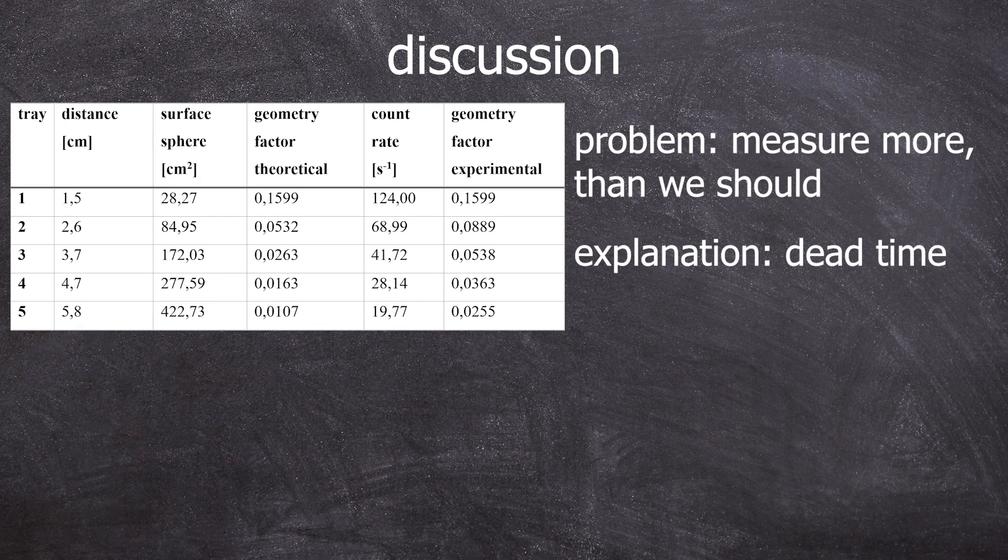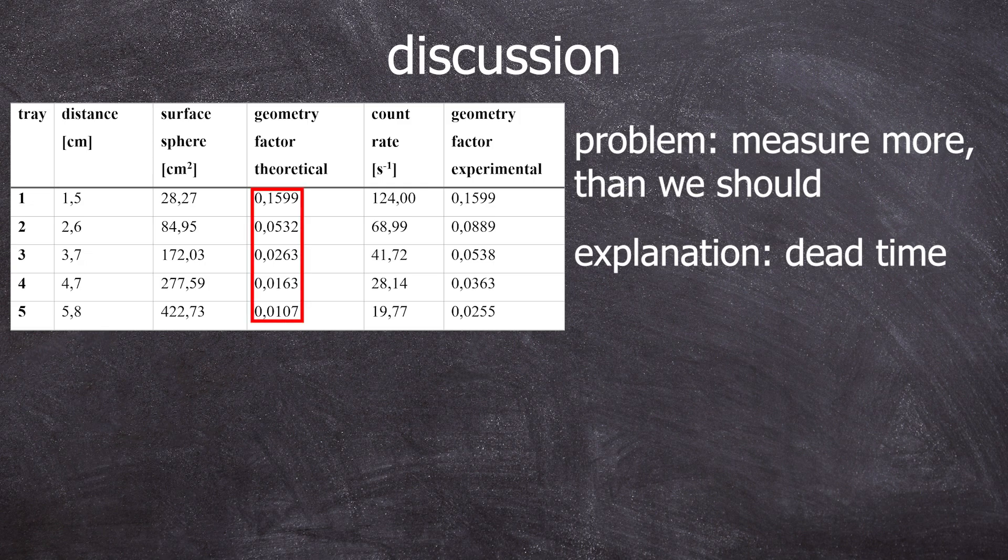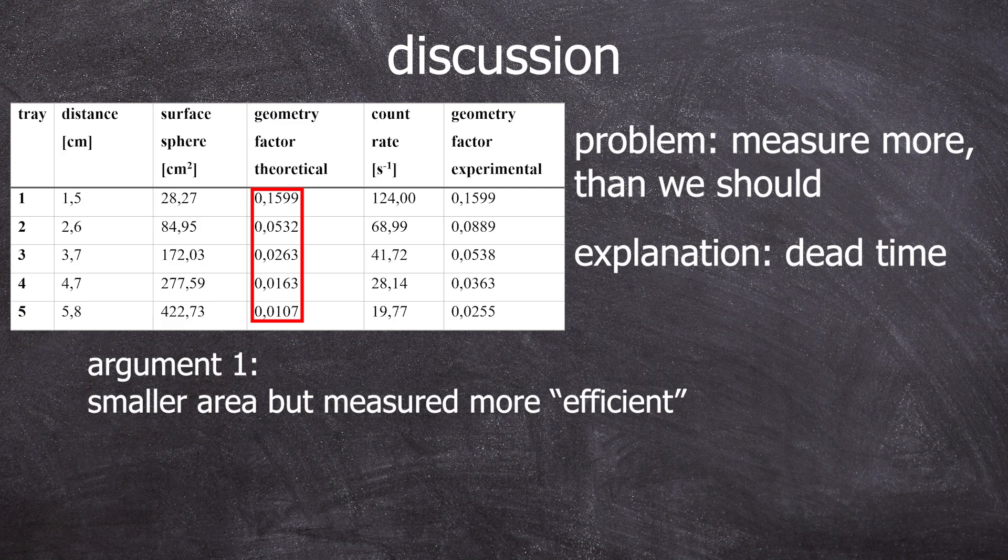At the highest count rate, you also have the most dead time. The further we move away, the lower the dead time becomes, because the count rate also decreases. So while you are covering a smaller percentage of the surface, you effectively count more of the area that you do cover, because fewer photons simply pass through the detector due to the reduced dead time. This is one way to argue it.